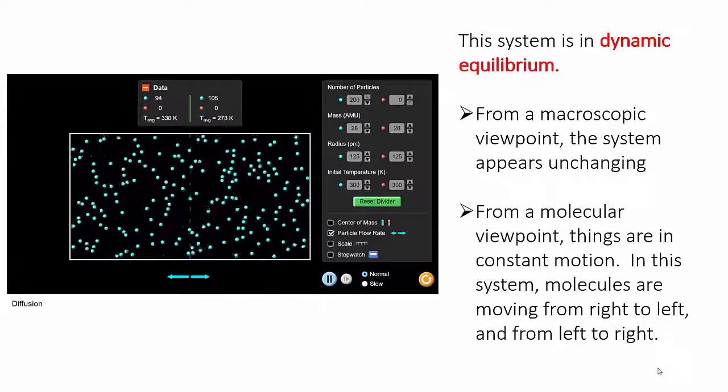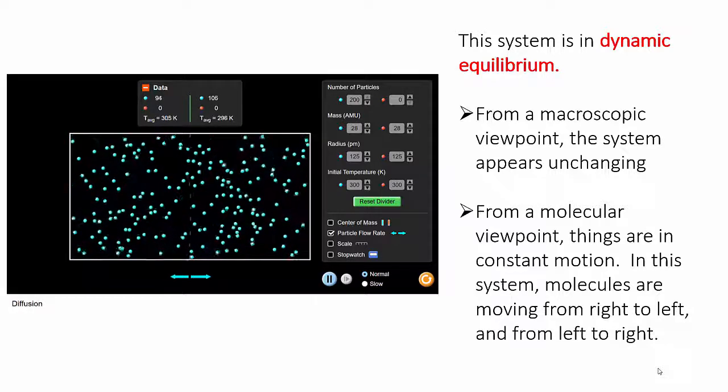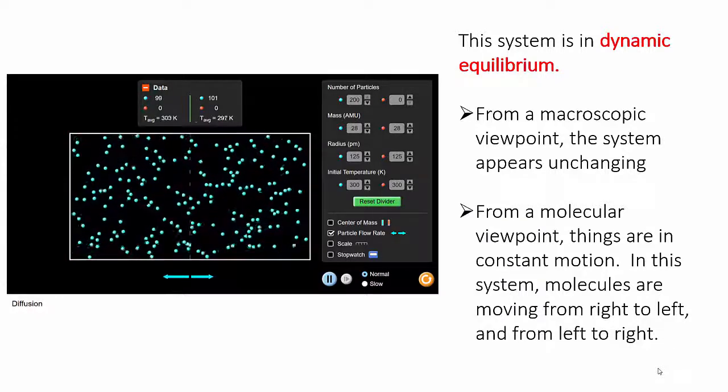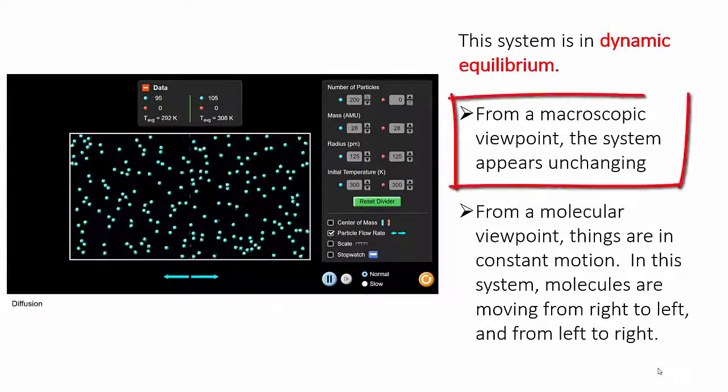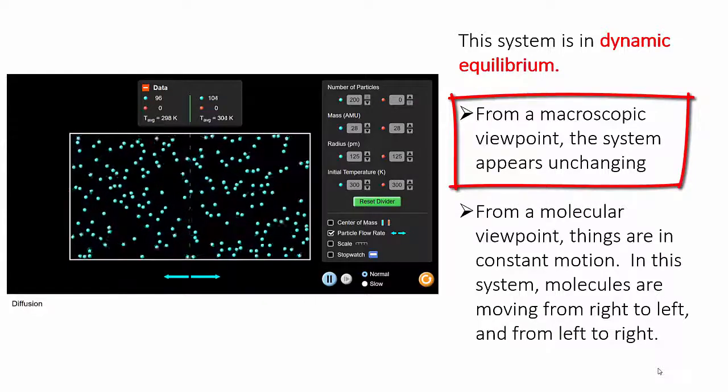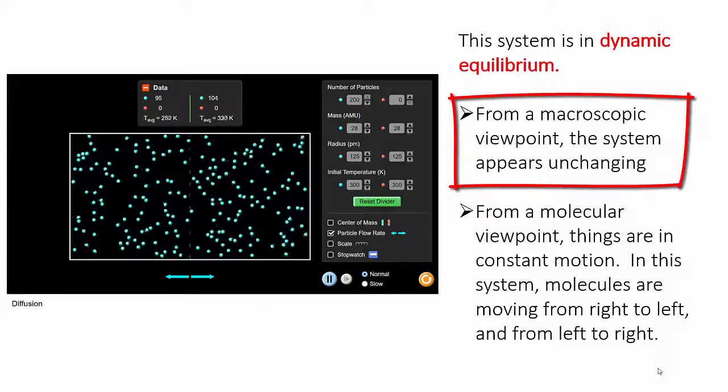There are two key points here. The first is that looking at the system as an average, for instance if you focus on the number of particles on each side, the system doesn't appear to be changing. There are those little fluctuations, but on average it's steady.